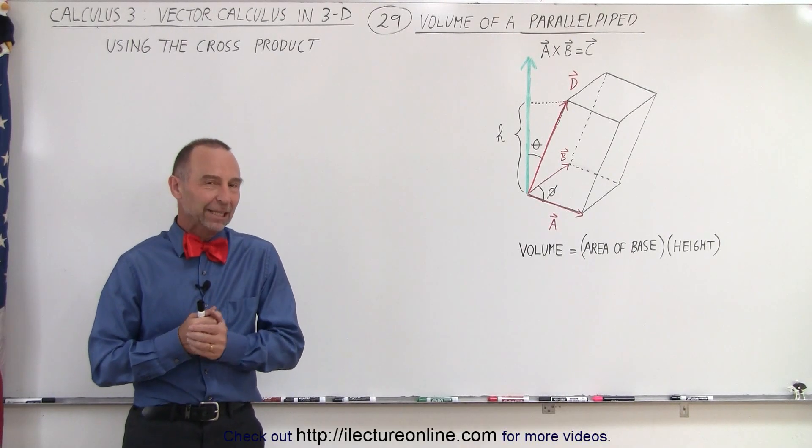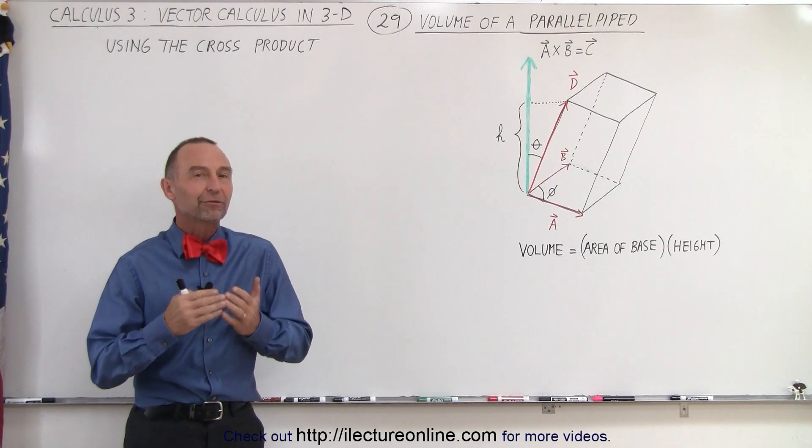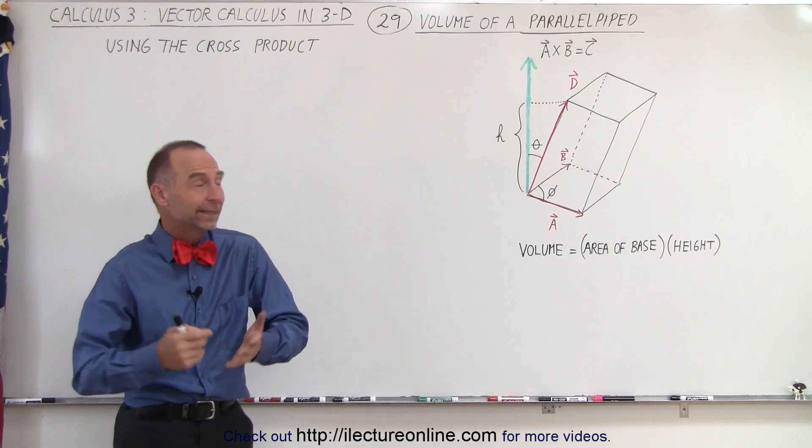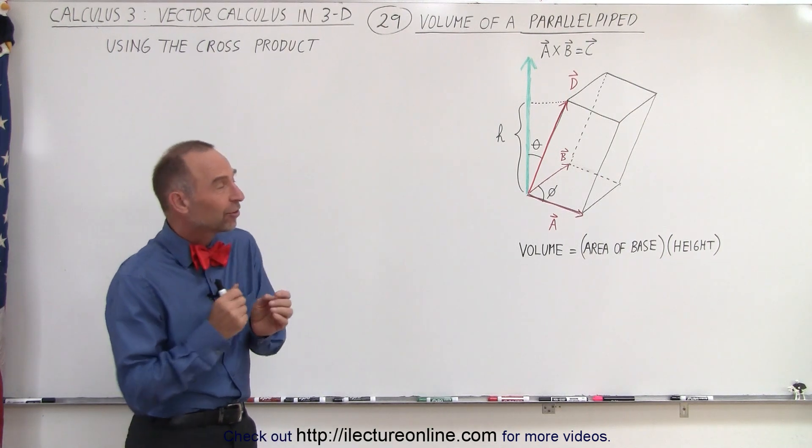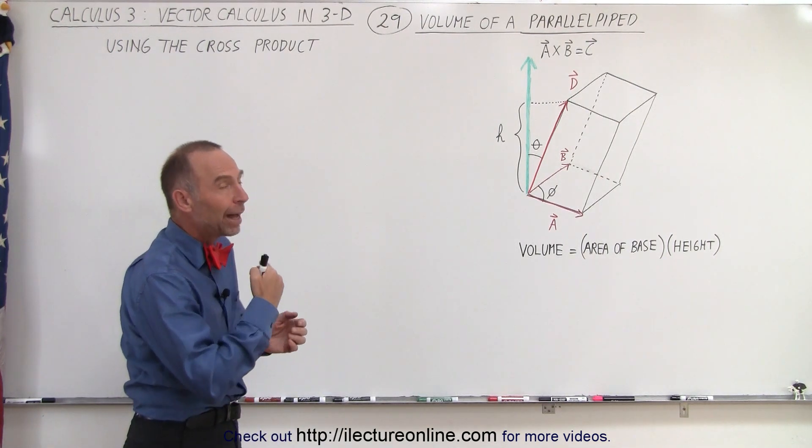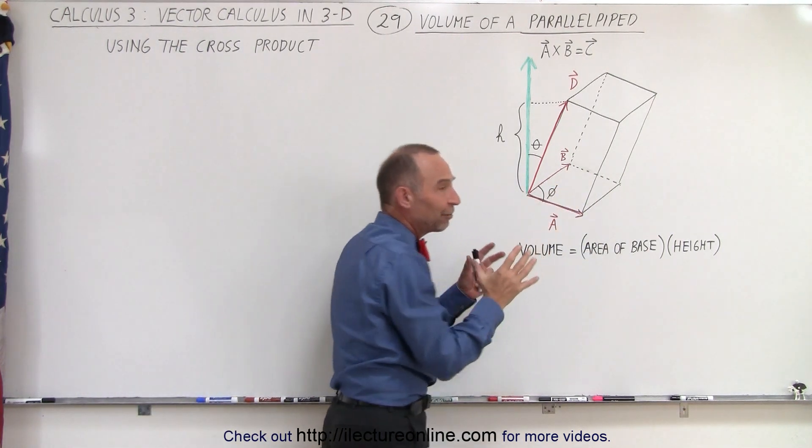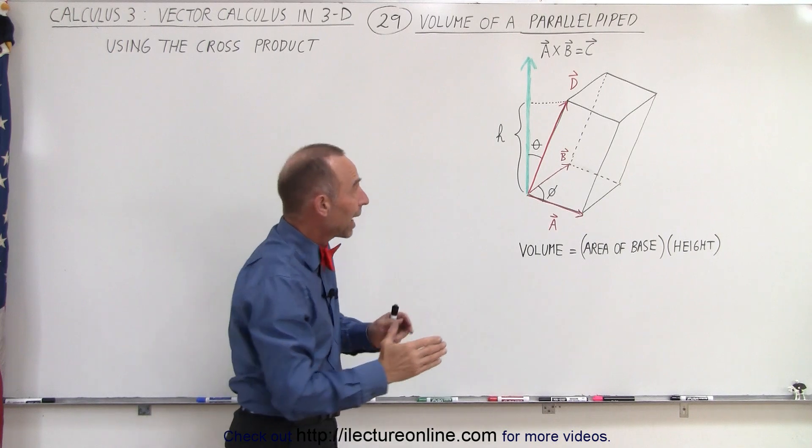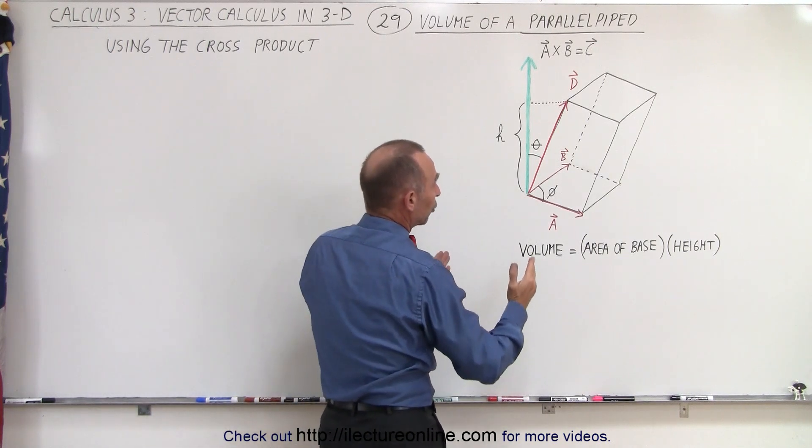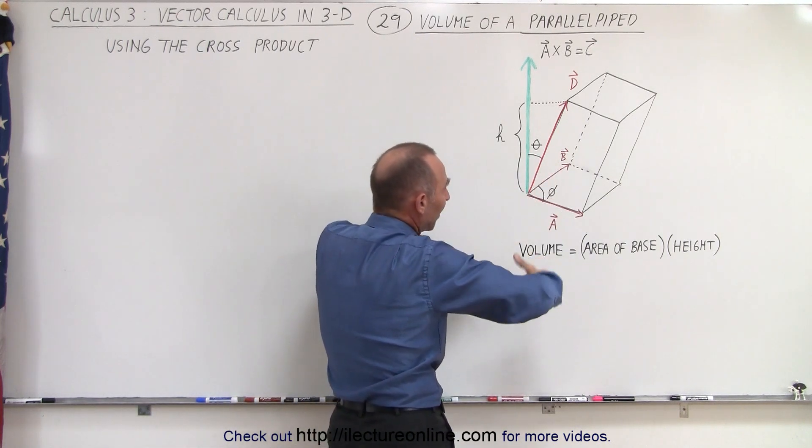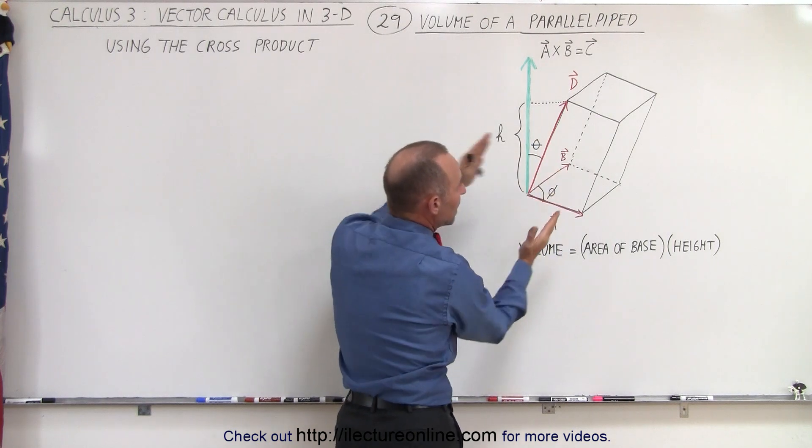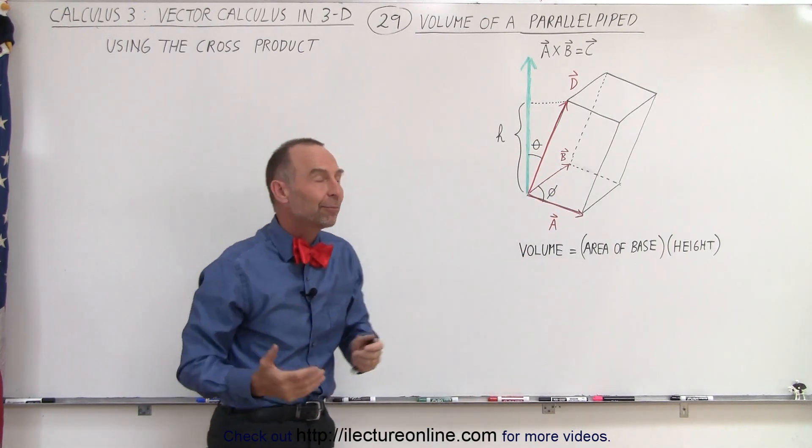Welcome to iLectureOnline! In the previous video we saw how to find the volume of a cube or a rectangular box, but here instead we have what we call a parallelepiped, which means that the base does not have to be a square, it could be a parallelogram, and the object doesn't have to be straight up and down, it could be leaning over like the Tower of Pisa.